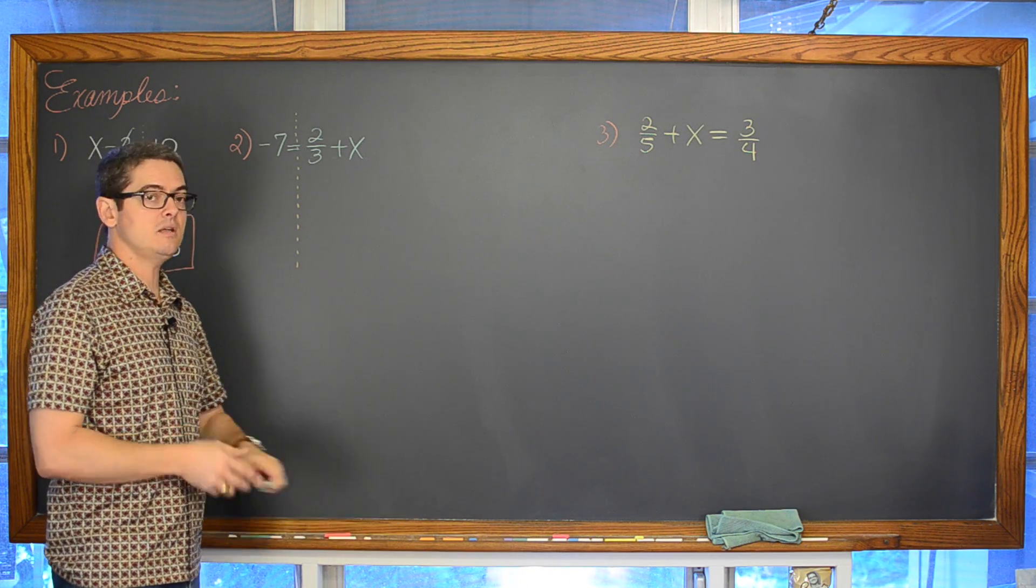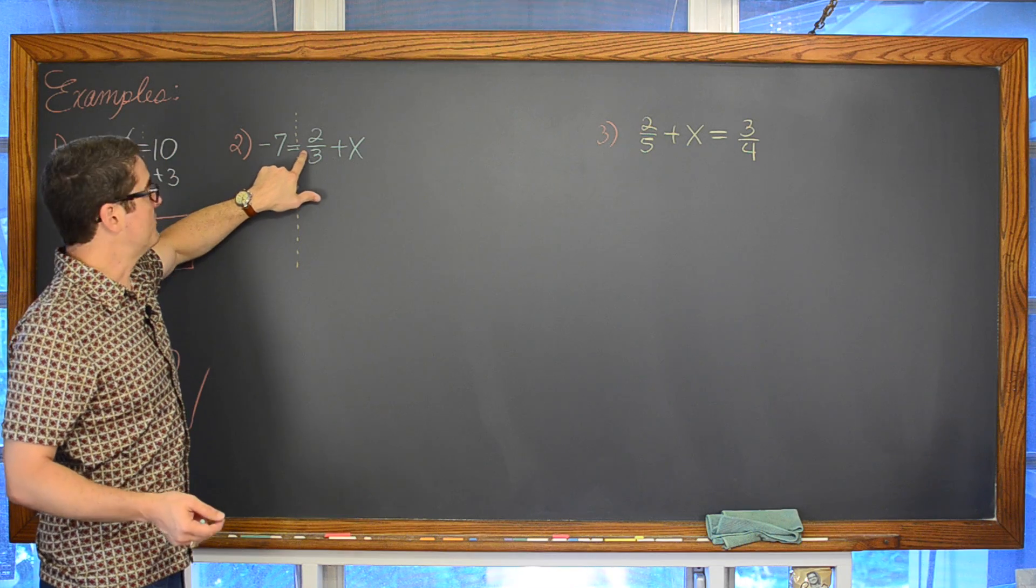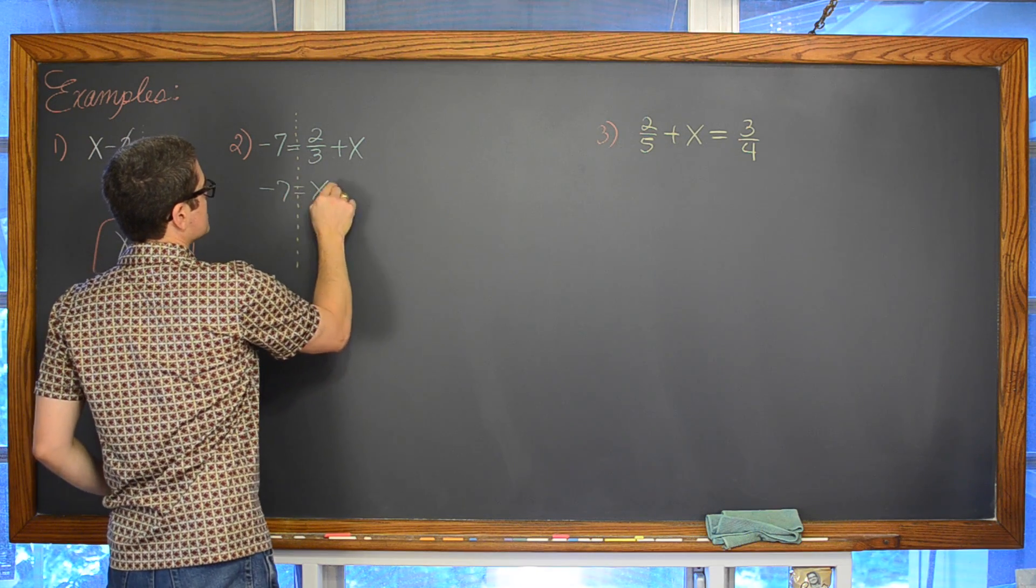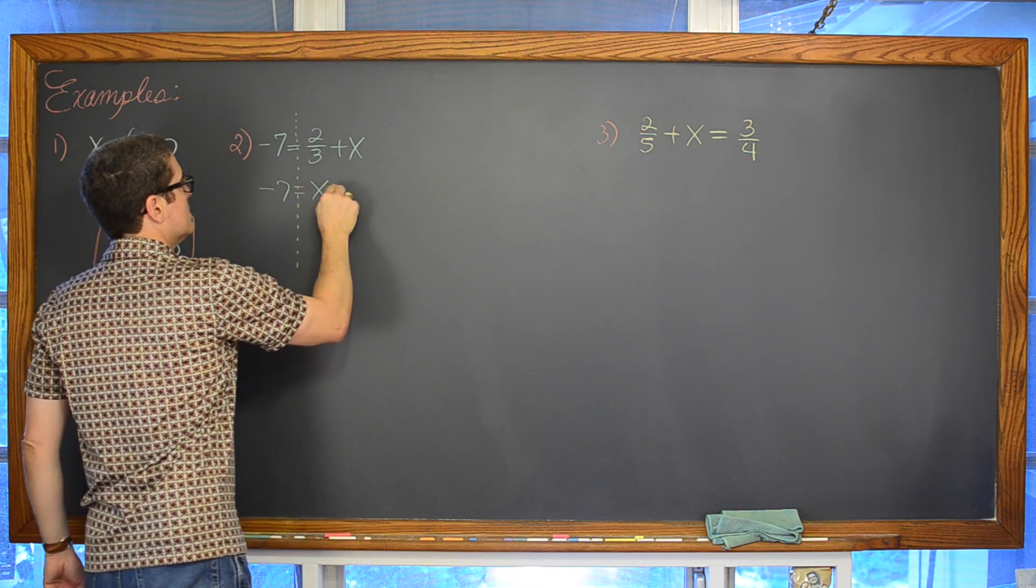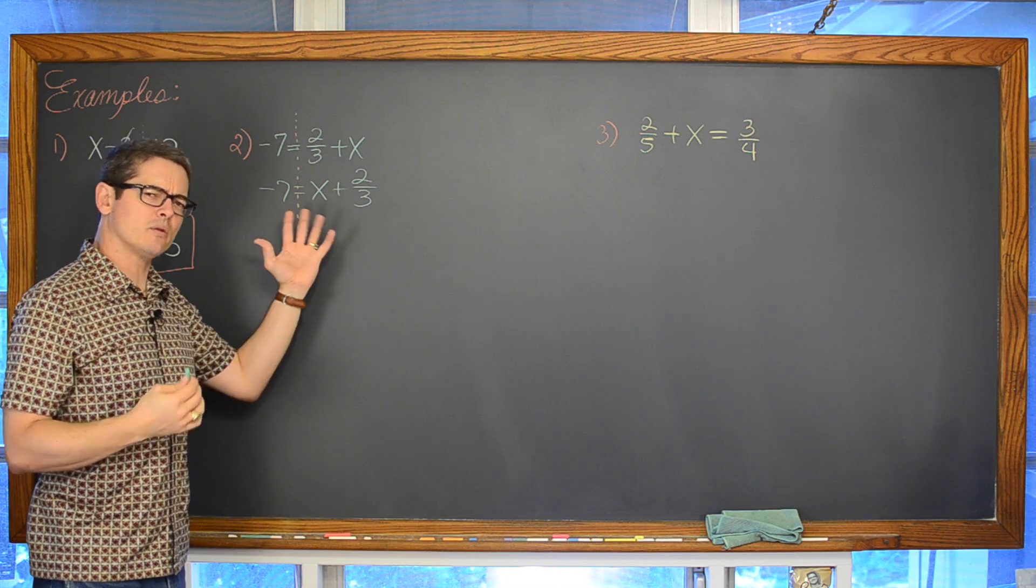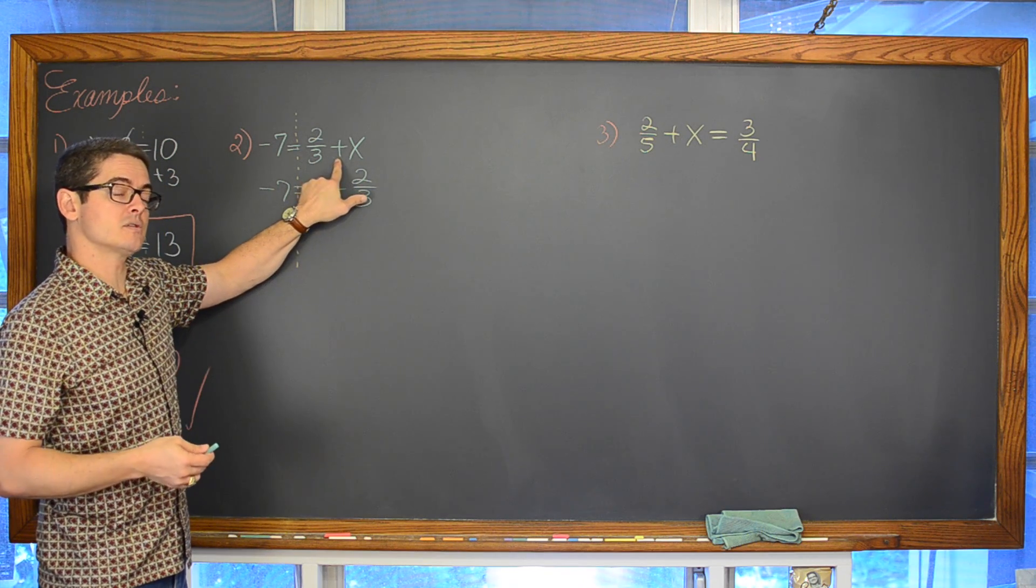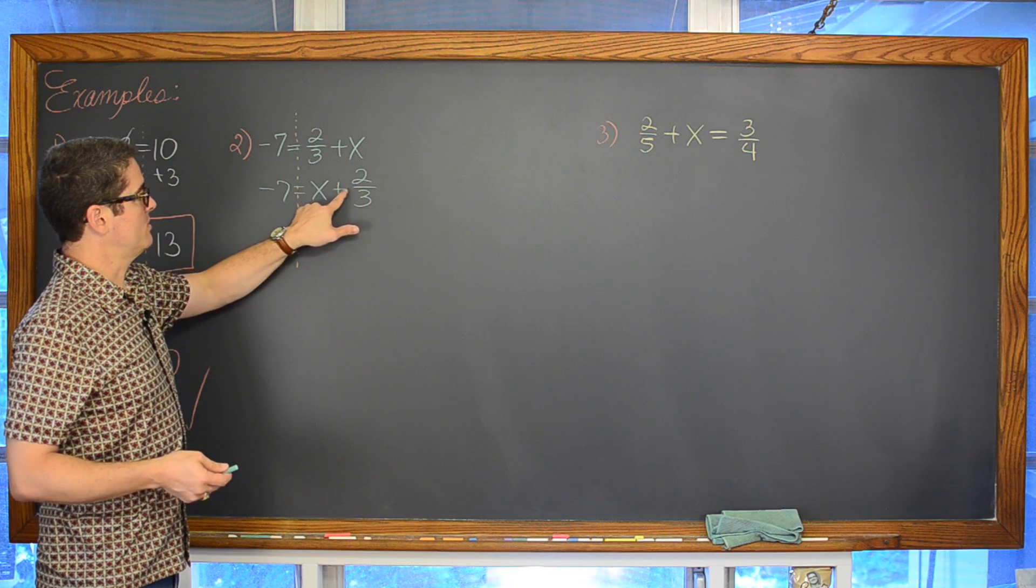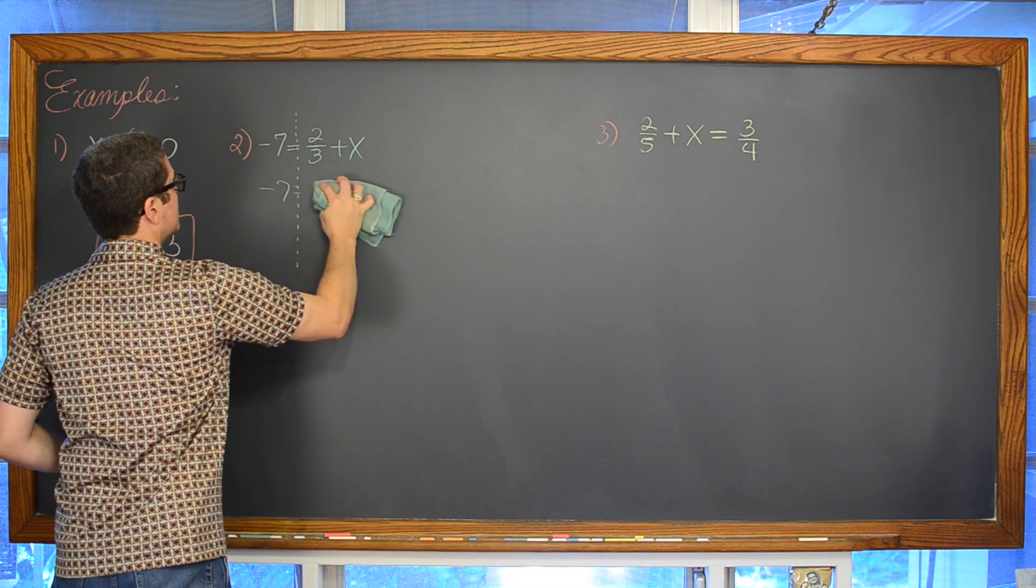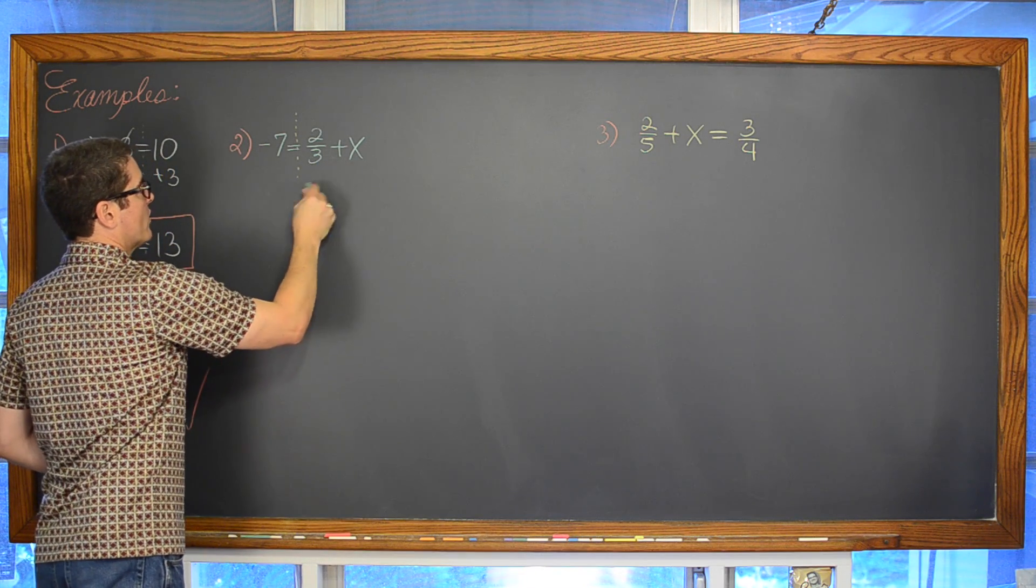And what we are going to do is we are going to see that on the right hand side where the variable is we have a positive 2 thirds. That is an addition of 2 thirds with the x on that side. We can also rewrite that as negative 7 is equal to x plus 2 thirds. My x is positive and my 2 thirds is positive. So to undo that addition or that positive 2 thirds on the right hand side of this equation we are going to do the inverse math operation which is subtract.